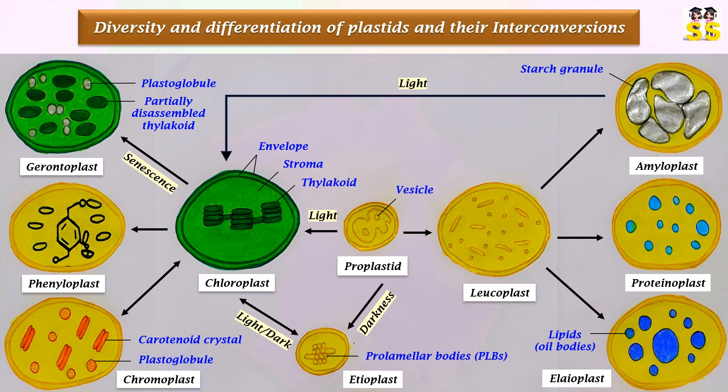Chloroplasts can also further differentiate into the dying gerontoplast, phenyloplast, or chromoplast. Proplastids can also develop into an intermediate plastid called leukoplast. Based on its function, leukoplasts may further differentiate into either amyloplast, proteinoplast, or oleoplast. Leukoplasts and chromoplasts are also interchangeable — when a leukoplast attains pigments it becomes a chromoplast, and when a chromoplast loses pigments it can become a leukoplast.